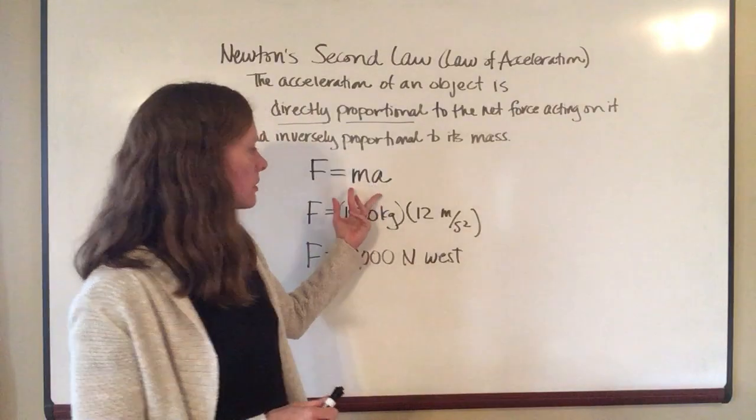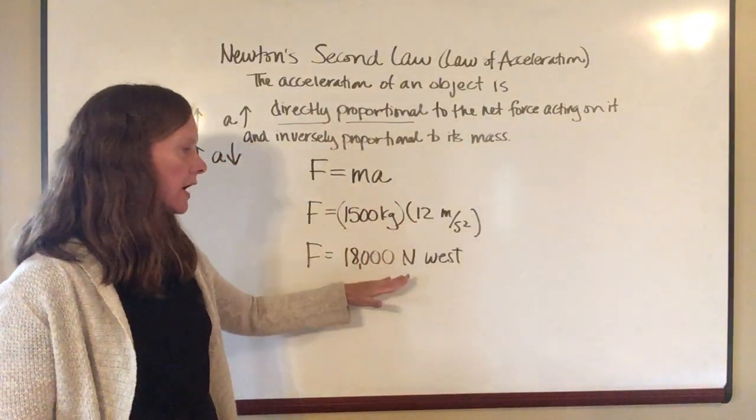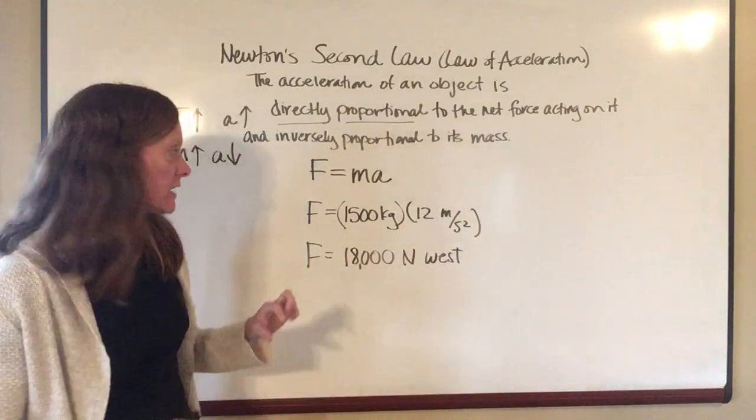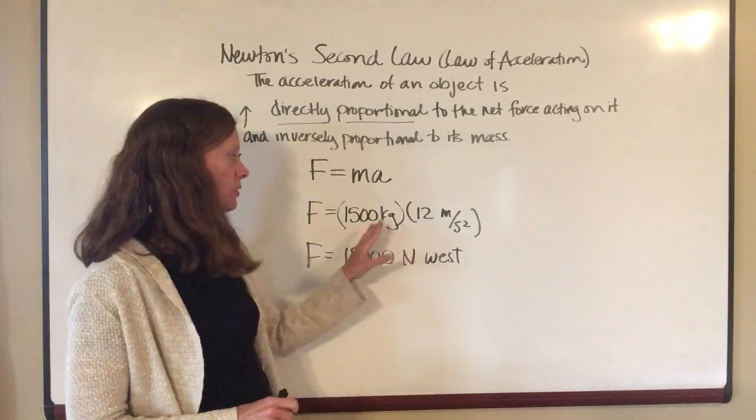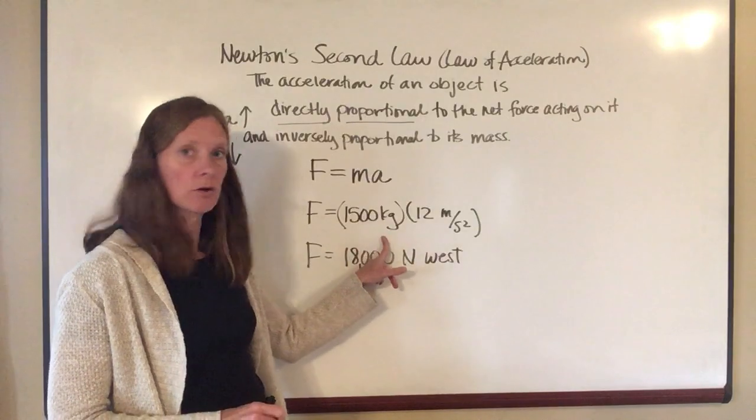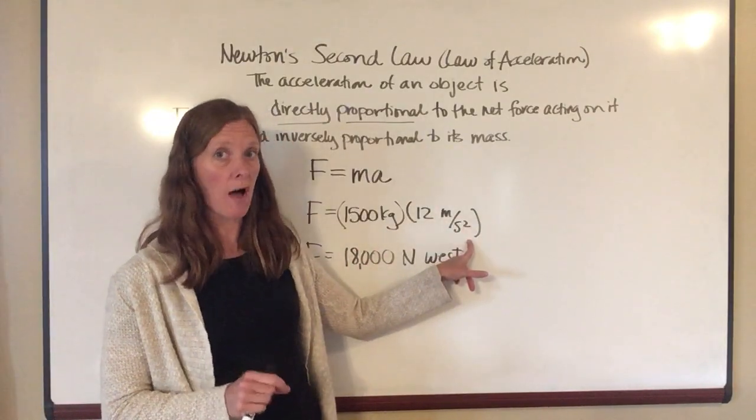If they give you a mass and an acceleration, all you have to do is multiply those two numbers together to get a final force. When you're doing these problems, make sure that every time you write a number down, that you write the units after it. Don't just write 15, 12, write 1,500 kilograms, write 12 meters per second squared. Keep those units on there.